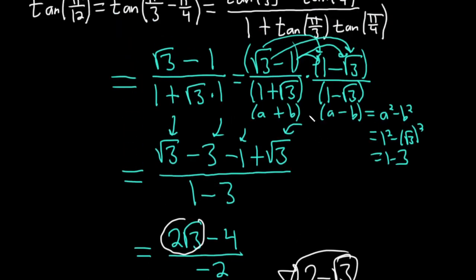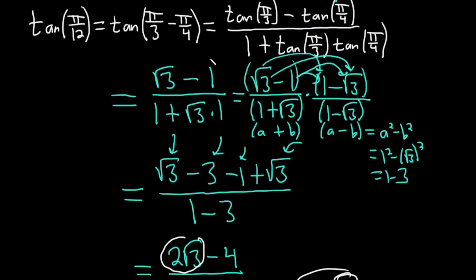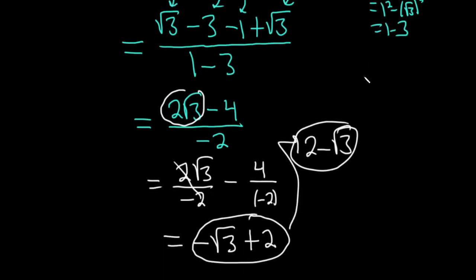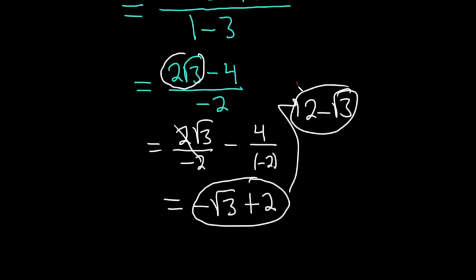You could have left the answer as square root of 3 minus 1 over 1 plus square root of 3 — that's correct — but many people consider it incorrect because it's not rationalized. It's important to know how to rationalize; it's a good skill. The much better and fully simplified final answer is 2 minus square root of 3. Good luck!